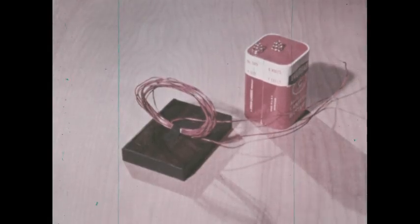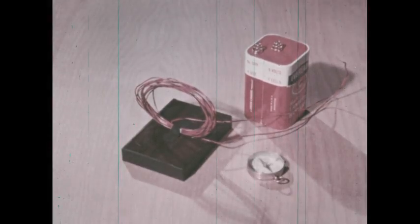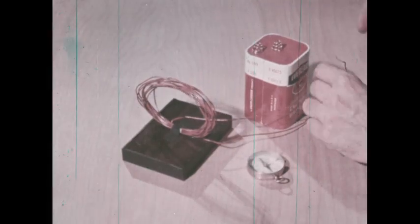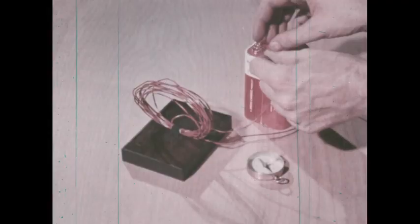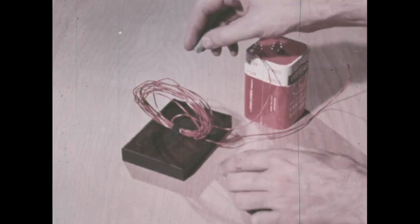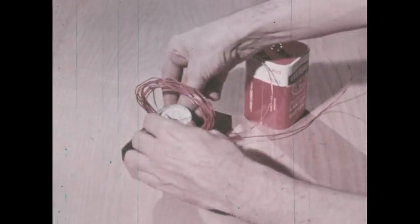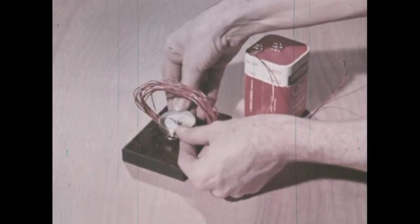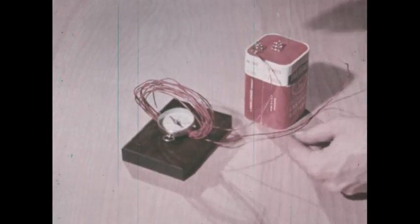Here is an experiment you can perform to show a relationship between a magnetic field and an electric current. Use a dry cell battery, a coil of wire, and a compass. Attach one end of the coil of wire to one terminal of the battery. Place the compass inside the coil. Now touch the other end of the coil to the other terminal of the battery.